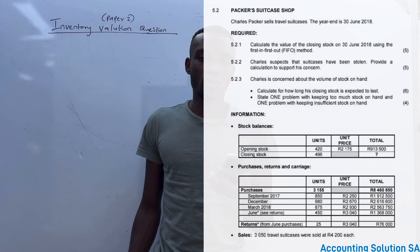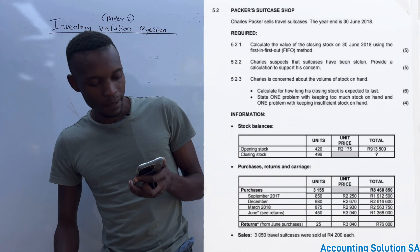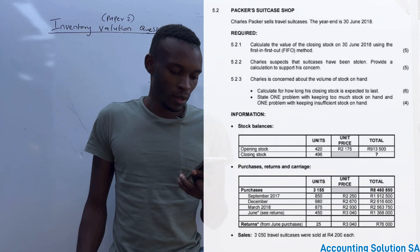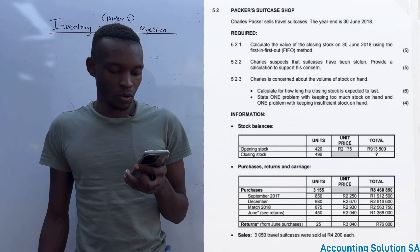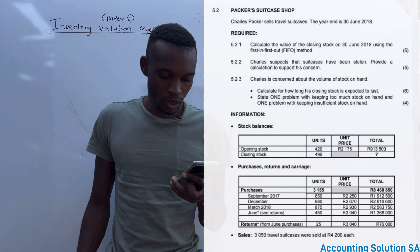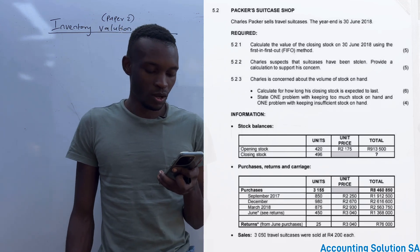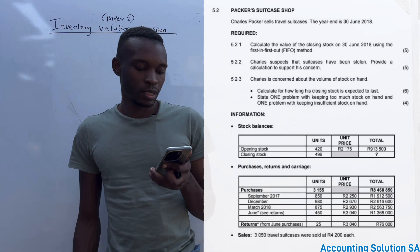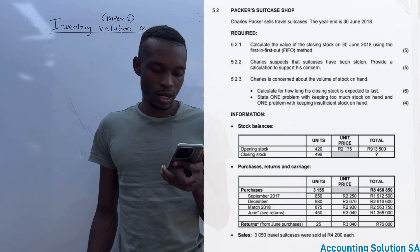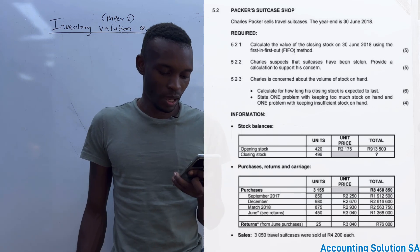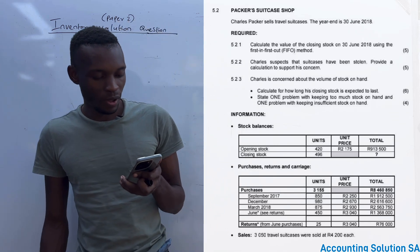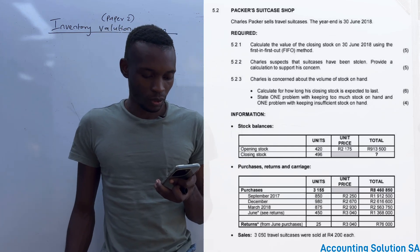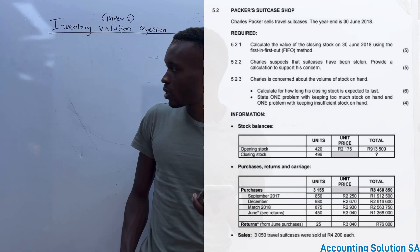The year end is 30 June 2018. The requirements are: 5.2.1 — calculate the value of closing stock on 30 June 2018 using the first-in first-out method, which is the FIFO method, for five marks. The second one — Charlie suspects that suitcases have been stolen; provide a calculation to support his concern. Let's start with the first one.